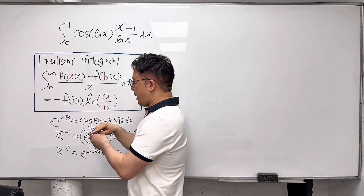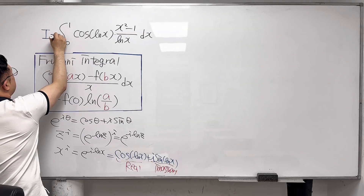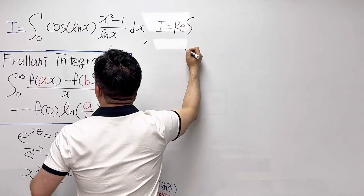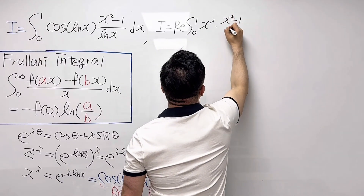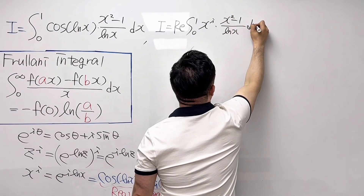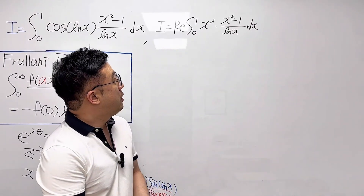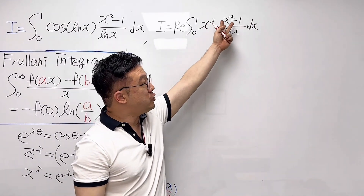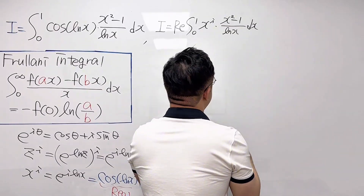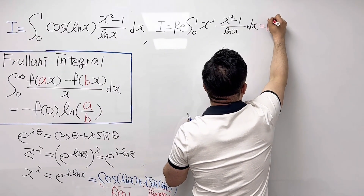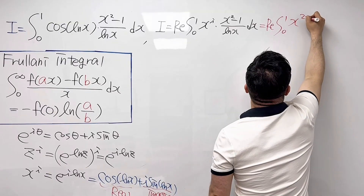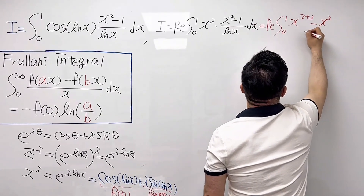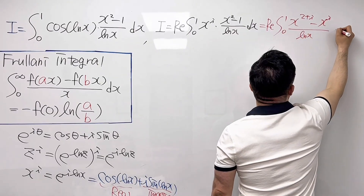So based on this, cosine(ln x) is the real part of x^i. We can rewrite the integral — I'll call it I. So I equals the real part of the integral from 0 to 1 of x^i times (x² minus 1) over ln(x), dx. Multiplying x^i into the two terms in the numerator gives the real part of the integral from 0 to 1 of (x^(2+i) minus x^i) over ln(x), dx.